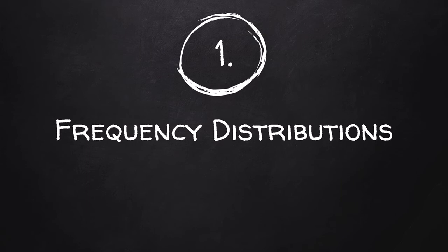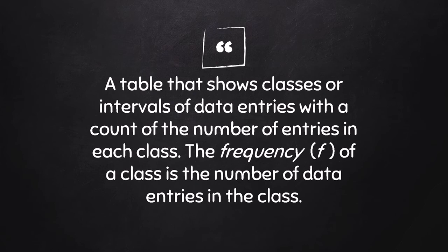So we already identified what frequency is — but what is this idea of a distribution? A distribution has to do with the way that something is divided up. For example, if I have a hundred dollars to distribute among three friends and I give one friend sixty dollars, another twenty, and another twenty, I've distributed my money in a particular way. A distribution is how the frequencies are broken up or divided up in the sample we are analyzing.